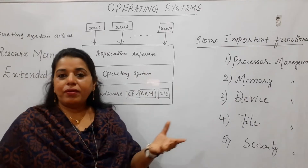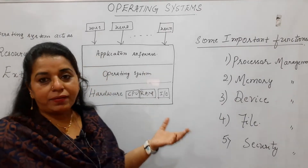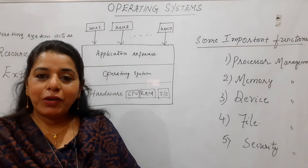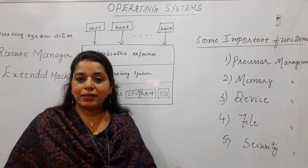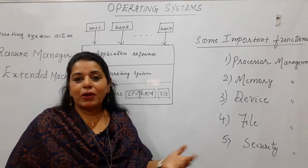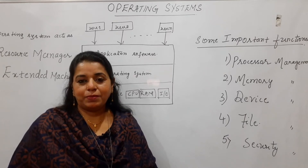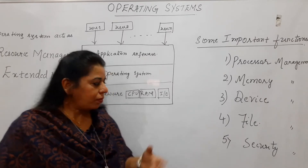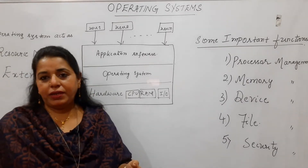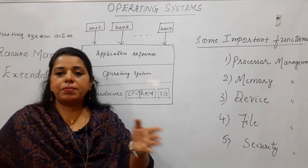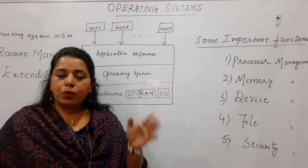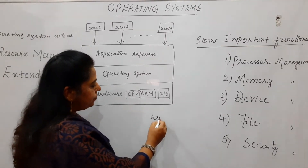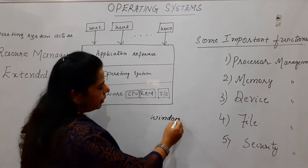At present, we have different operating systems in use. The most popular one that all of us use is the Windows operating system. Then we have Linux, Solaris, and Mac OS — all are popular operating systems. Some operating systems are meant for convenience. A user-friendly operating system is one which the user is more comfortable using, and Windows is the most convenient operating system.